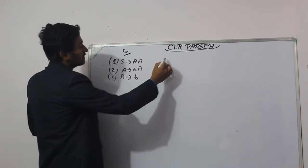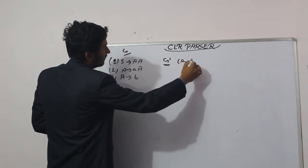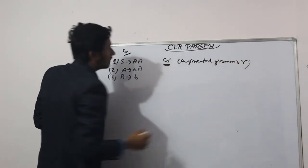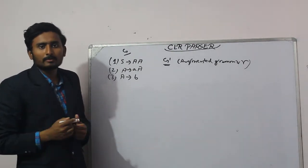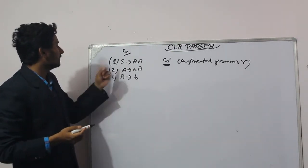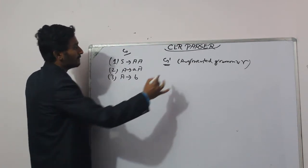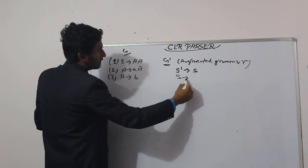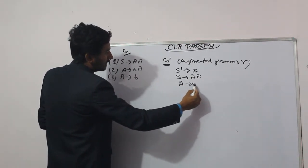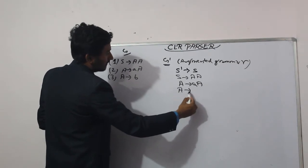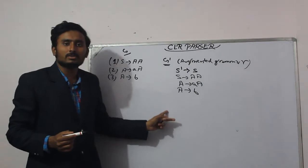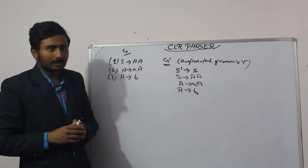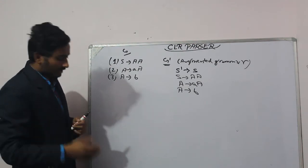The first step is to construct the augmented grammar. The augmented grammar will contain one extra production: S' derives S. So the augmented grammar is: S' derives S, S derives A A, A derives small a capital A, and A derives small b. In each and every question, you must first find the augmented grammar for the given productions.